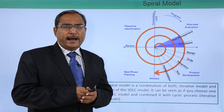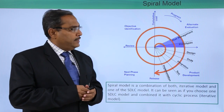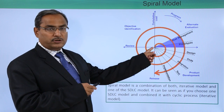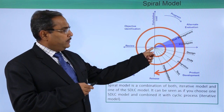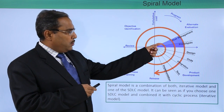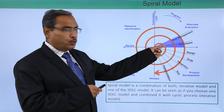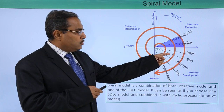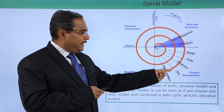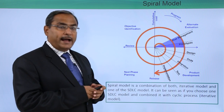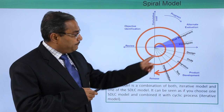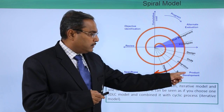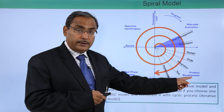Look at this diagram. Here you can find that this particular software development process has been initiated. We are having risk management, prototypes, design, code, integration, test, and implementation. This section is considered under product development.